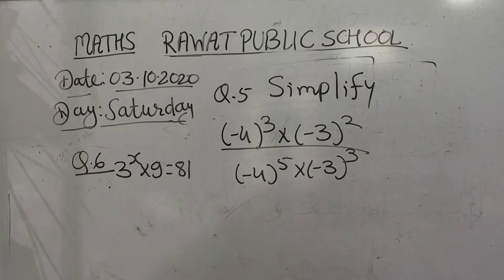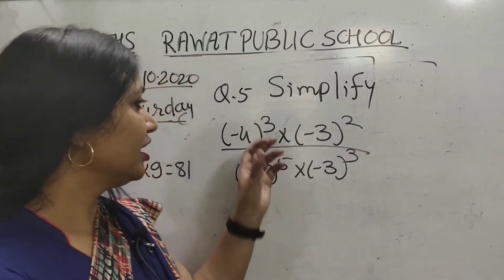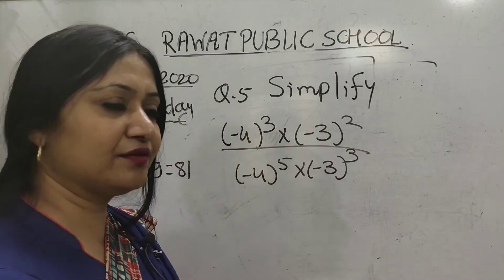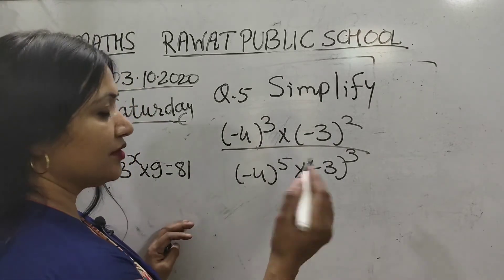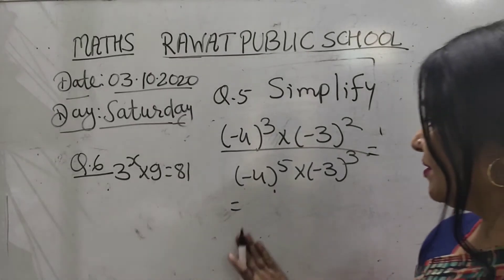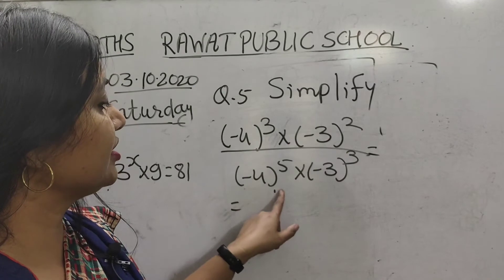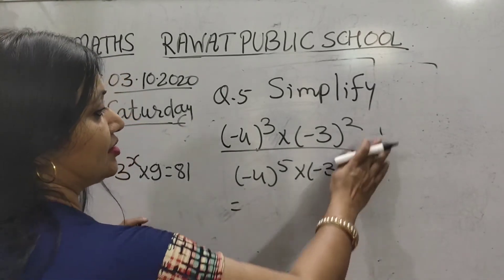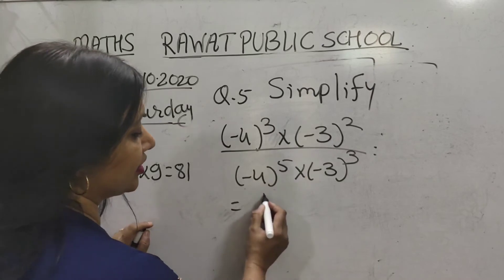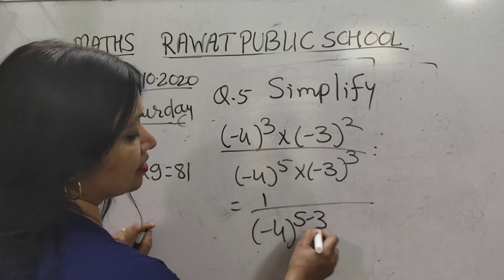Now simplify using laws of exponents where the base is negative. Question: simplify (−4)^3 × (−3)^2 divided by (−4)^5 × (−3)^3. Here the base (−4) appears with powers 3 and 5 — since 5 is greater in the denominator, we bring it down. Using the division law a^m ÷ a^n = a^(m−n).